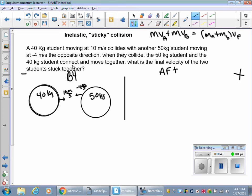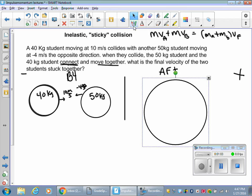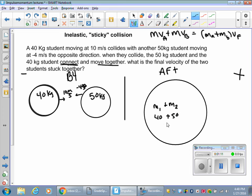When they collide, the 50 kilogram student and the 40 kilogram student connect and move together. That means when I draw my after, I can't have two separate circles. I have to have two connected circles to show that the masses are combining here. So this is m1 plus m2. This is 40 plus 50. So the combined mass is now 90, right?